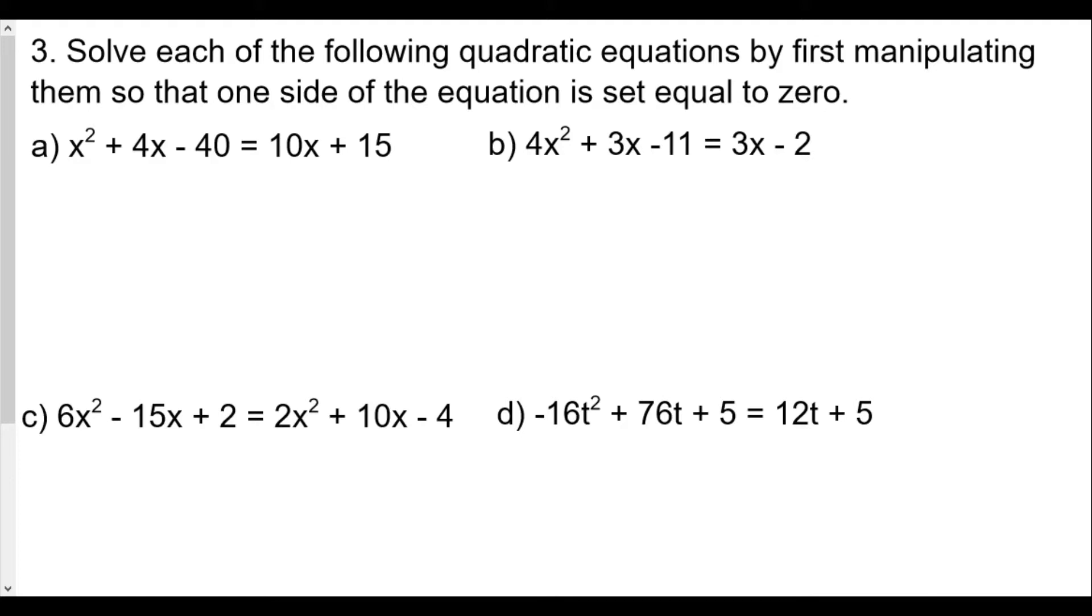For A, x² + 4x - 40 = 10x + 15. Since x² is positive on the left side, we're going to just move everything to the left side, subtracting 10x and 15. We're going to get x² - 6x - 55 = 0.